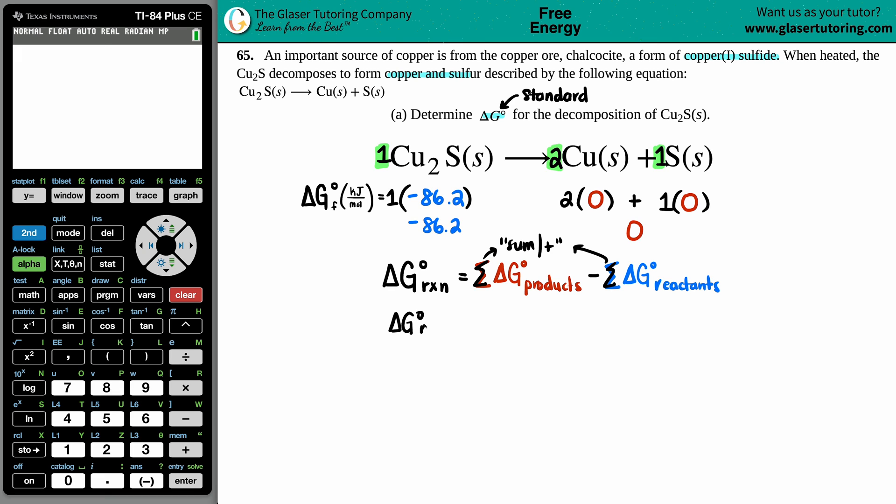So the ΔG for the whole entire reaction would be the sum of the products, which is zero, minus the sum of the reactants, which is -86.2. So the overall ΔG for this reaction would be a positive 86.2. If you do zero minus a negative 86.2, it turns out to be positive—a negative with a negative: keep, change, change.